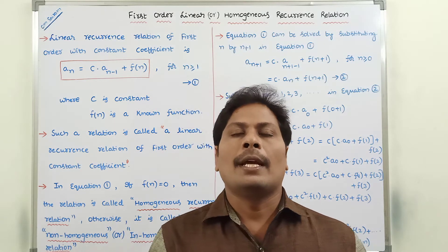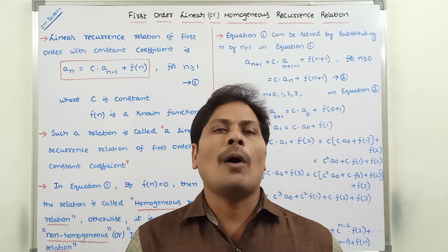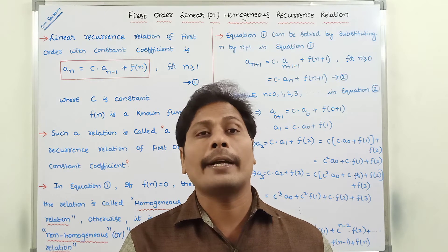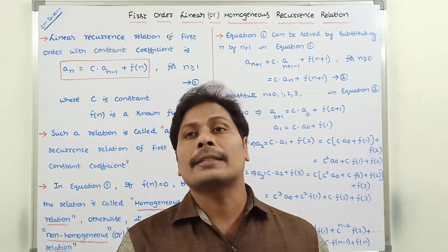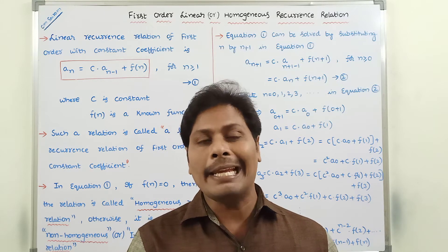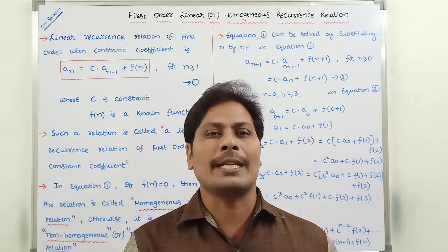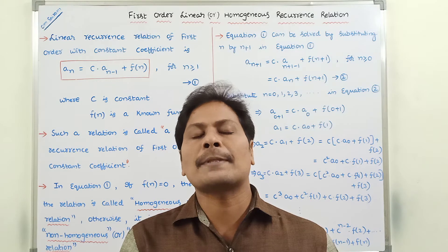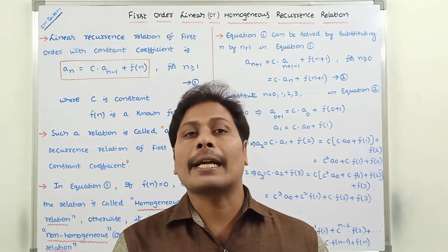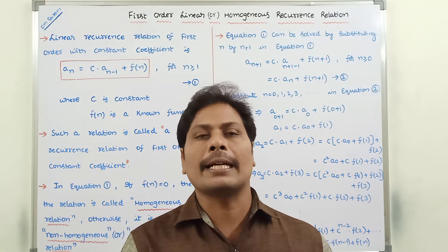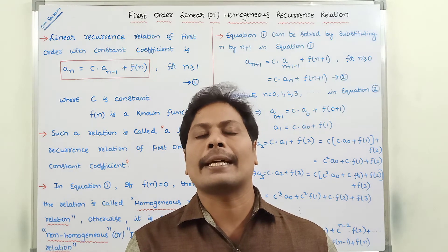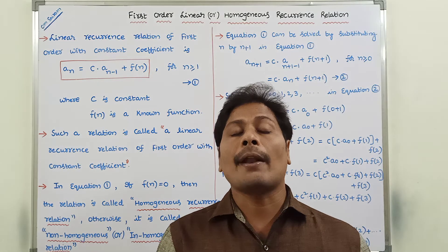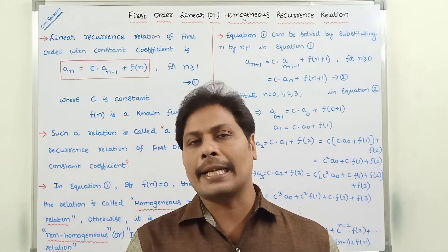Now in this video, we will see how to solve the first-order recurrence relation that is linear or homogeneous. Generally, there are two types of recurrence relations: one is homogeneous recurrence relations and the second one is non-homogeneous recurrence relations.